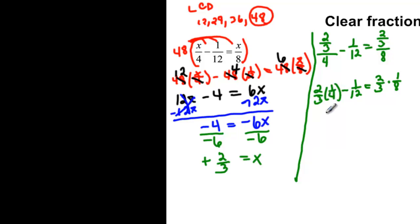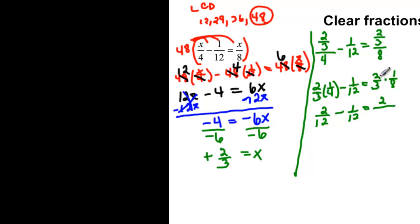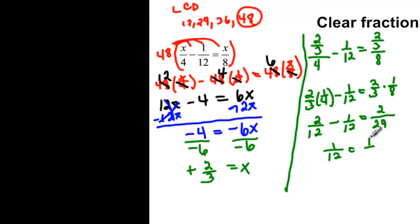This gives me 2 over 12 minus 1 over 12, which is equal to 2 times 1 is 2, and 3 times 8 is 24. 2 minus 1 would be 1 over 12 on this side. 2 over 24 reduces to 1 over 12, so we know that our answer is positive 2 thirds.